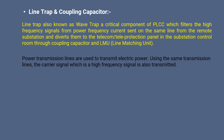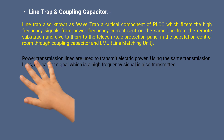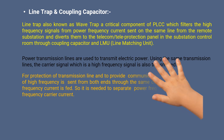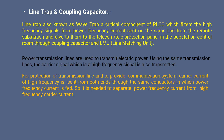Power transmission lines are used to transmit electrical power. Using the same transmission lines, the carrier signal, which is a high frequency signal, is also transmitted for protection of the transmission line and to provide a communication system. Carrier current of high frequency and power frequency current from both ends are sent through the same conductors in which power frequency current is fed.